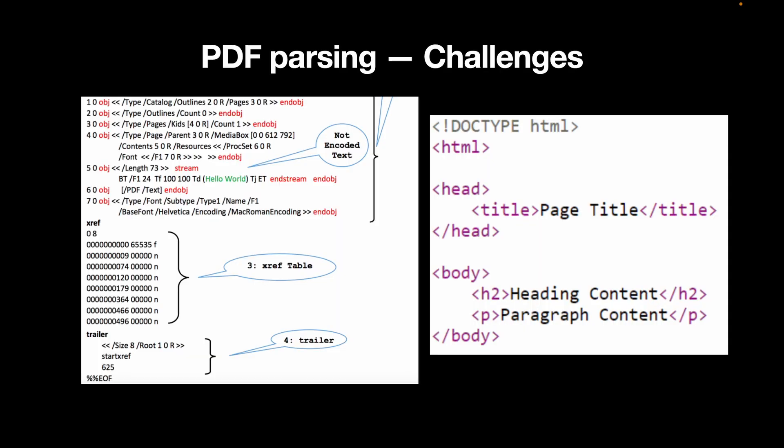The purpose of PDF parsing can be several-fold, such as searching or converting the PDF into structured documents. However, our main intention here is to extract text, tables, images, and graphics in order to train large language models or to vectorize and store them for retrieval augmented generation. So what are the challenges when it comes to dealing with PDFs?